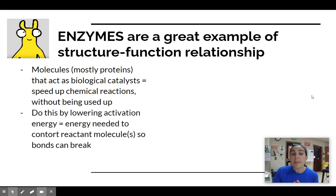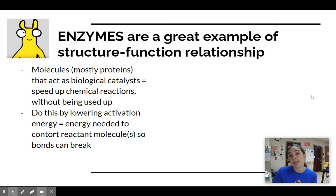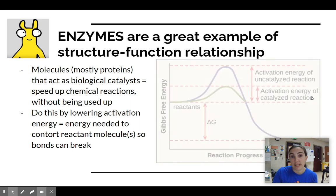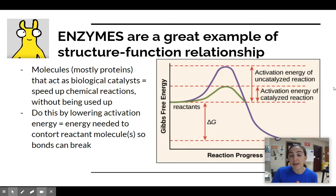Enzymes work by lowering the activation energy of a reaction — that's the energy that's needed to contort and shape the reactant molecules to break bonds or to put them in the correct position to create a new bond. This graph here shows the difference between a reaction without an enzyme and one with an enzyme. The x-axis shows the reaction progress from beginning to end and the y-axis gives you the amount of energy.